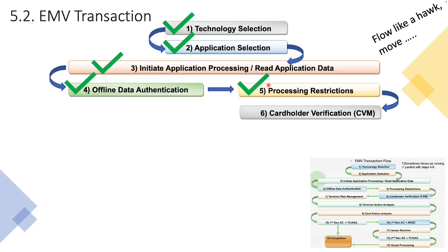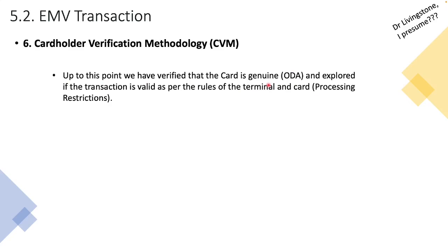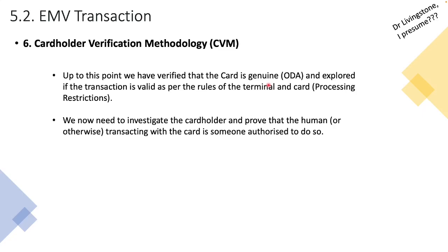So let's get into step six now, which is cardholder verification. We've verified that the card is genuine and checked parameters in the card to ensure the transaction is valid as per the product rules of both the card and terminal. We are now at a point where we are investigating the cardholder — the human being — to confirm that the person processing the transaction is the authorized cardholder. The card is issued to Bob — is it really Bob who's attempting to use the card?